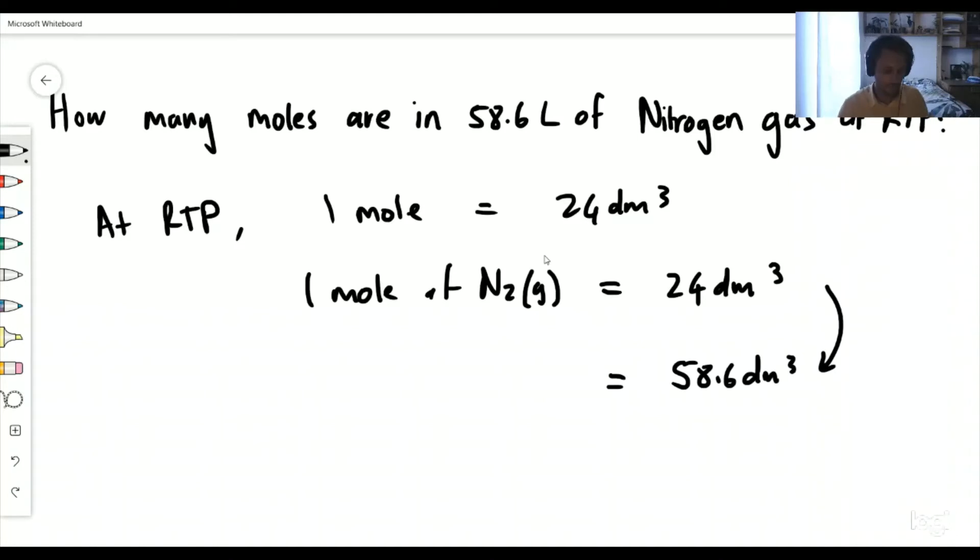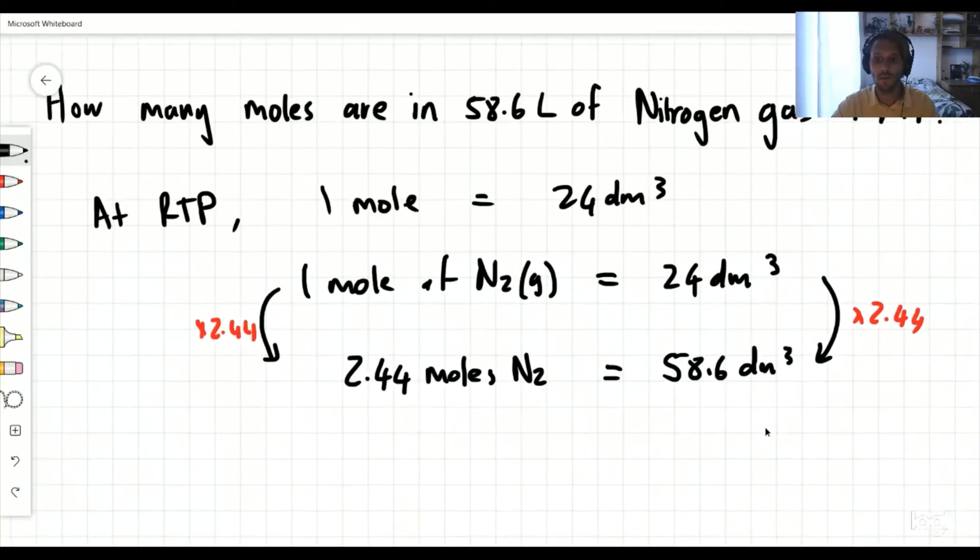I'm wanting to find out how many moles are in 58.6 liters. Let's get the same units going here, decimeters cubed. So how do I get from 24 to 58.6? Simply type into your calculator 58.6 divided by 24, you get times by 2.44. Do the same thing to this side. The answer to this question is 58.6 decimeters cubed gives me 2.44 moles of N2 gas.